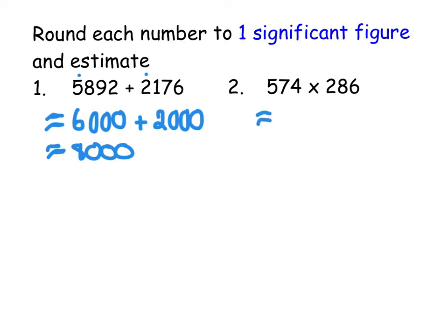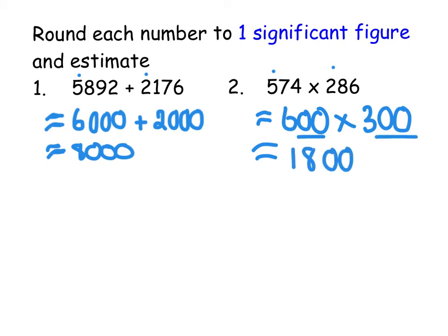So the 5 is potentially going to stay. The next number is a 7, so that 5 is going to go up. So that becomes 600 times, keep the 2 maybe, the next number is an 8. That will mean that turns into a 3. So it becomes 600 times 300. Now the trick here is you do 6 times 3 is 18. Two zeros and two zeros there, so you add four zeros to your answer. So that is roughly 180,000.